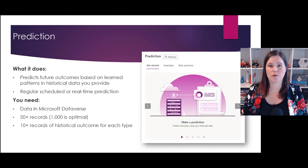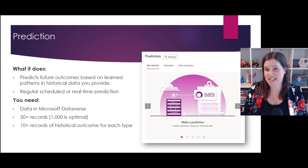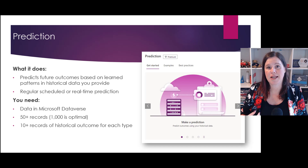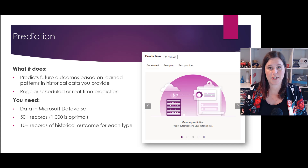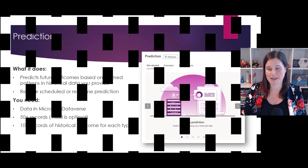The prediction model is all about looking at your historical data and using that to predict future outcomes. The prediction model can handle binary prediction — yes or no, like is someone likely to renew their membership. It can handle multiple options, like is the shipment going to be early, on time, or delayed. And it can also handle a numerical outcome, like how much is this claim going to be worth. There's great power in this one, especially if you've got a rich data set in Dataverse or Dynamics 365.